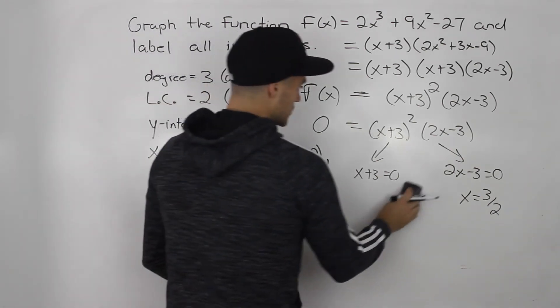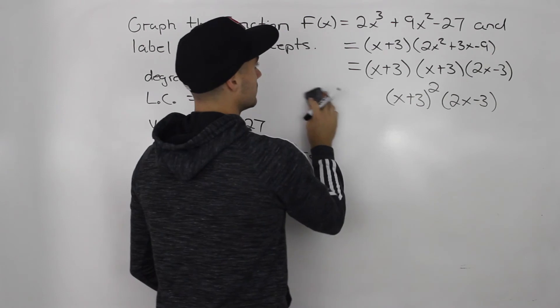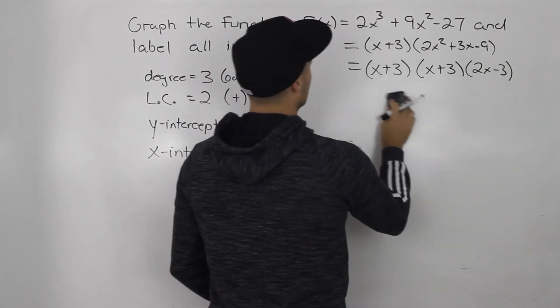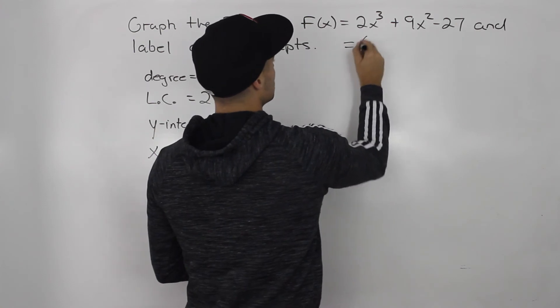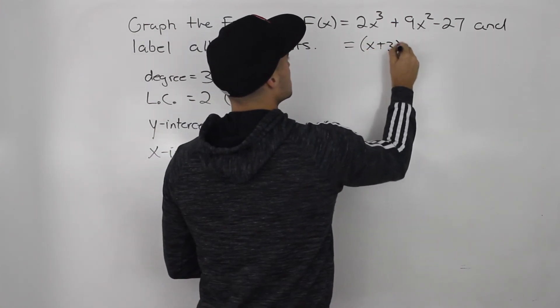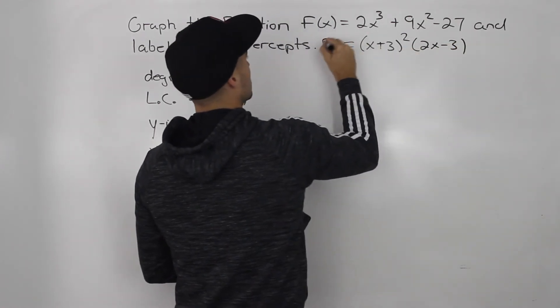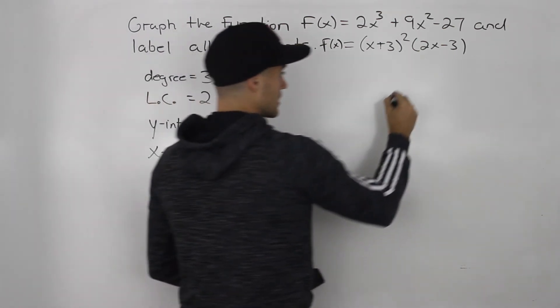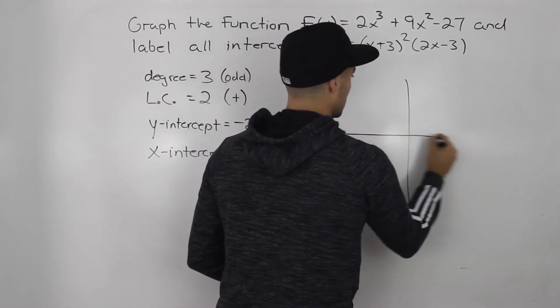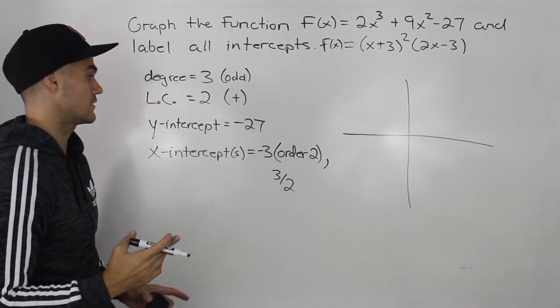That is our other x-intercept, 3/2. And now we can take all of this information and we can make a fairly accurate graph. So let me just write this here. x + 3 squared 2x - 3. So let's use this information to make a graph. First thing, let's label all of the intercepts.